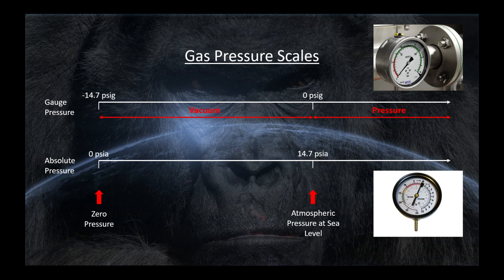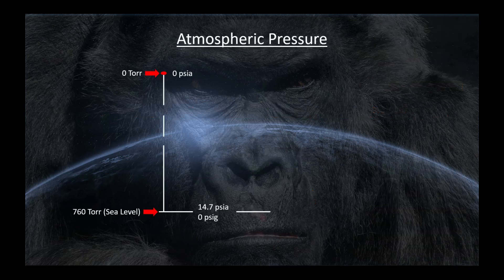Let's talk about atmospheric pressure, because this one is a big bone of contention in the flat earth community. Here's a scale that goes from 760 torr at sea level, which is the equivalent of 14.7 pounds per square inch absolute, or zero pounds per square inch gauge. Let's hop in the airplane and climb to 35,000 feet. When we get there, the pressure is going to be about 200 torr, only about 3.84 pounds per square inch absolute, and negative 10.8 pounds per square inch gauge pressure.